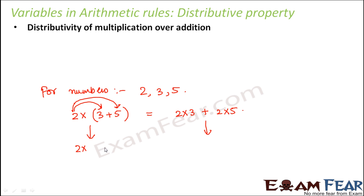For example, if you write it as 2 multiplied by (3 plus 5), that is 2 multiplied by 8, which equals 16. On the other side, 2 into 3 is 6, and 2 into 5 is 10, so 6 plus 10 is also 16. This process just makes it a little simpler. So that is the distributive property for numbers.